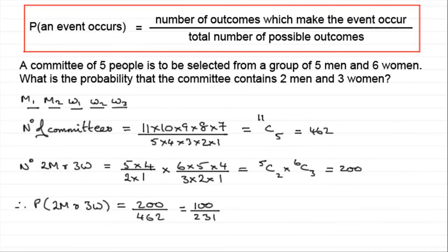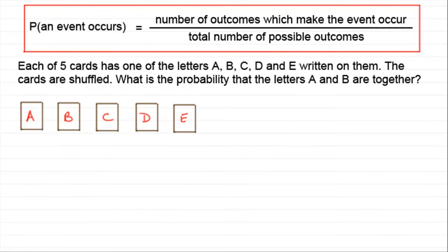Okay well that's one example using combinations. I've got another example here that involves permutations. In this example what we've got is each of five cards has one of the letters A, B, C, D and E written on them. The cards are shuffled and what is the probability that the letters A and B are together? Well if we consider the total number of possible outcomes, that is the total number of ways that we can shuffle these cards, what would it be? Let's just put an intro here and that would be the number of different arrangements. So order does matter here unlike the previous example. We've got five different cards so there's going to be five factorial ways of arranging them. Five factorial comes to 120.